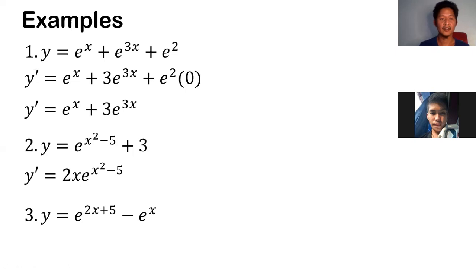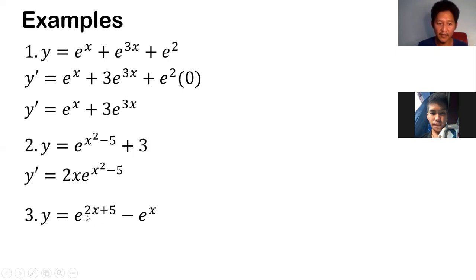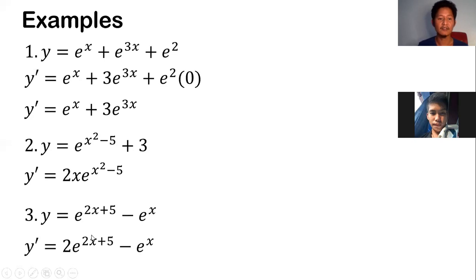Third example: how do we get the derivative of e to the (2x plus 5) minus e to the x? Same thing — e to the u. We copy e to the (2x plus 5), multiply by the derivative of 2x which is 2, and derivative of 5 is 0. So we get 2 times e to the (2x plus 5). The last term is just e to the x, so we just copy that.